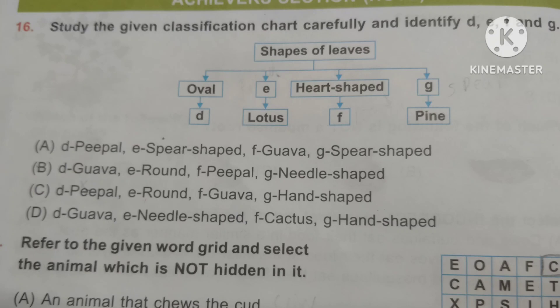Friends, in this chart shapes of leaves are given. First is oval — the D leaves will have an oval shape. In this question it is given that E is lotus, then you have to memorize what shape the lotus leaves have. Next one is heart shape, so you have to tell that F leaves is heart shape.